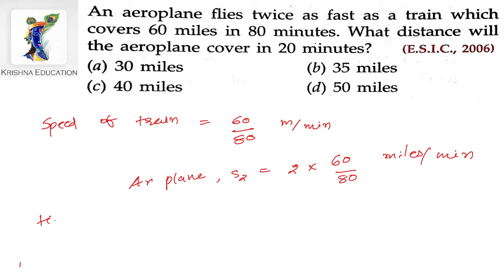Now the time period is 20 minutes. So distance covered by the aeroplane would be S2 into time, which is nothing but 2 into 60 divided by 80 into 20 minutes.